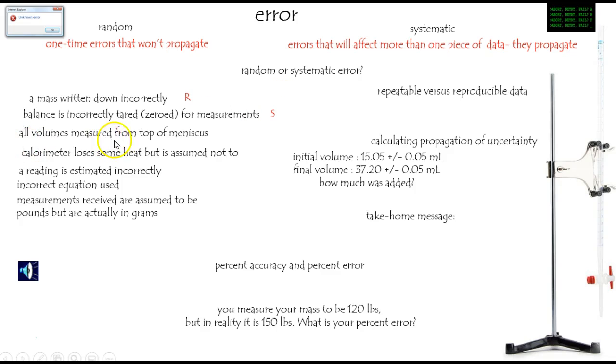All volumes are measured from the top of the meniscus. Once again, notice the plural here. So every measurement is wrong. It's systematic. Your calorimeter is losing some heat, but you didn't know it did. Any data that comes from that will be inaccurate. That's systematic. A reading is estimated incorrectly. That's just one reading. If the other ones are all good, maybe you're okay. It's random.